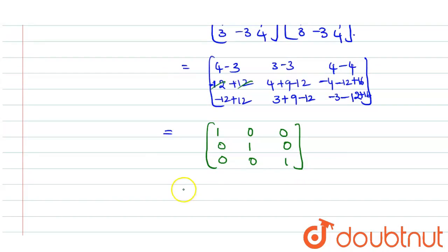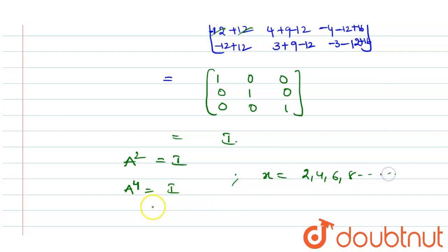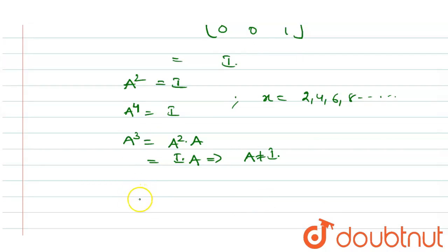So A² = I, confirming A is involutory. Therefore A^x = I for x = 2, 4, 6, 8, and so on (all positive even integers). For A³ = A²·A = I·A = A, which is not equal to I, so odd values are excluded. The set S_B consists of even positive integers, and we need to find the minimum value of the given summation.